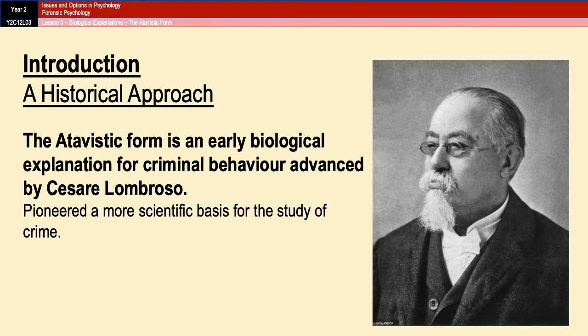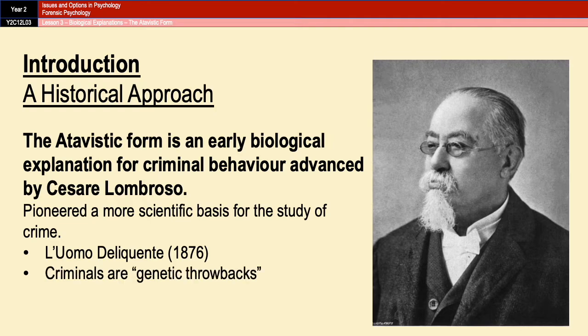In 1876, Lombroso wrote a book called L'Uomo Delinquente, which effectively translates as The Criminal Man. In that book, he suggests that criminals are actually genetic throwbacks, effectively saying that there are genetic subspecies who are primitive and didn't quite catch the evolutionary curve.